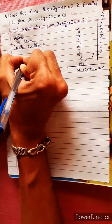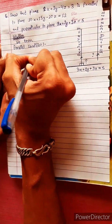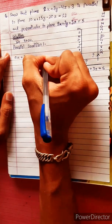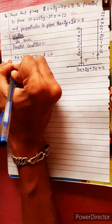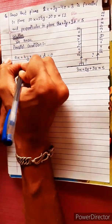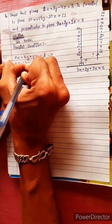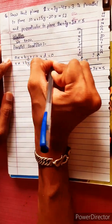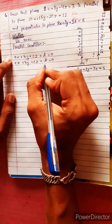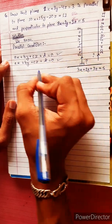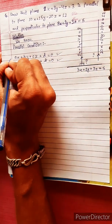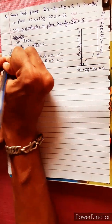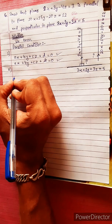The general form of a plane equation is Ax + By + Cz + D equals 0. A parallel plane takes the form Ax + By + Cz + K equals 0. These two planes are parallel to each other.